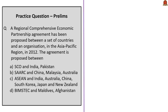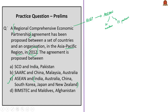The next question: a Regional Comprehensive Economic Partnership agreement has been proposed between a set of countries and an organization in the Asia-Pacific region in 2012. Whenever you are studying about RCEP, remember ASEAN. RCEP has been proposed among 10 ASEAN members and 6 free trade partners of ASEAN, which includes India, Australia, China, South Korea, Japan, and New Zealand. So the correct answer is option C: ASEAN and India, Australia, China, South Korea, Japan, and New Zealand.